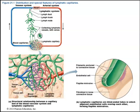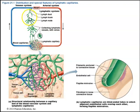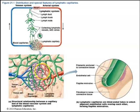Here we see the distribution and special features of lymphatic capillaries. We start off with lymphatic capillaries, which drain into collecting lymphatic vessels with valves. Along these collecting lymphatic vessels, we have lymph nodes. These vessels drain into lymph trunks, then eventually into a lymph duct, and then back to the heart. In this area, we also have our blood capillaries where gas exchange occurs, and our lymphatic capillaries, which are permeable to tissue fluid, bacteria, and viruses.